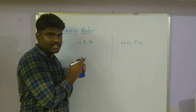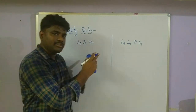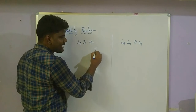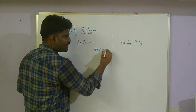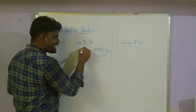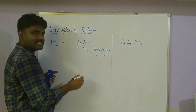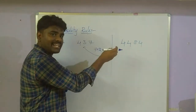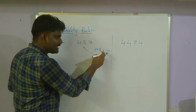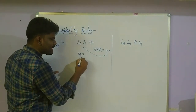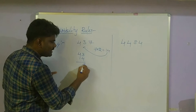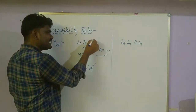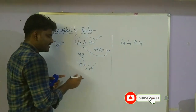Now we are entering into the 19 divisibility rule — it looks like the 7 divisibility rule. Take the units place and multiply by 2: 7 × 2 = 14. 14 is added to the remaining digits before it: 43 + 14 = 57. Is 57 divisible by 19? Yes. Then the entire number is divisible by 19.